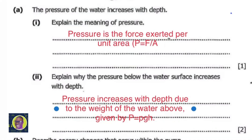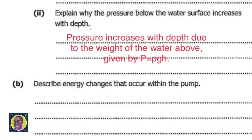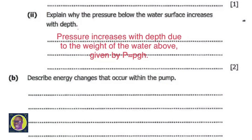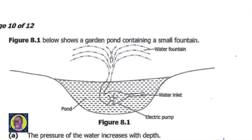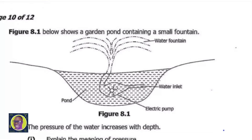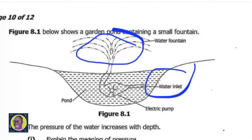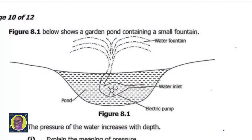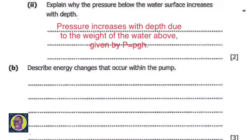Question (b): describe the energy changes that occur within the pump. Looking at the diagram, we have the water fountain at the top, the water inlet, the electric pump, and the pond.